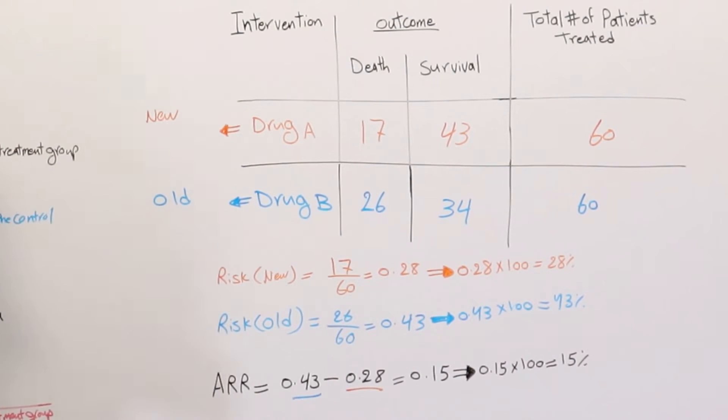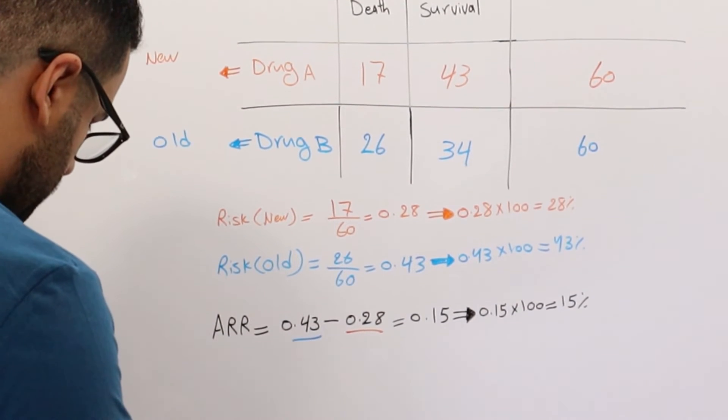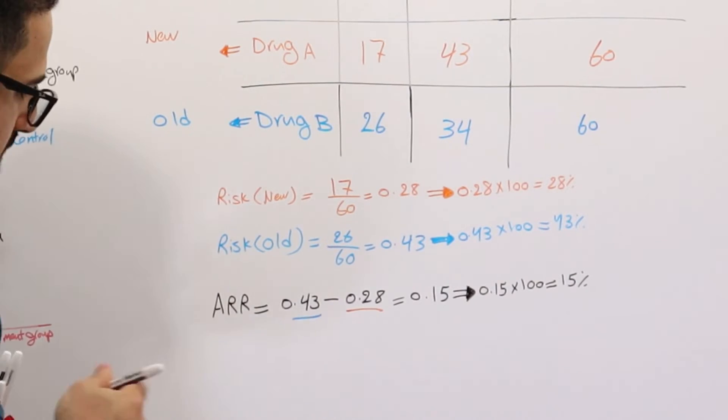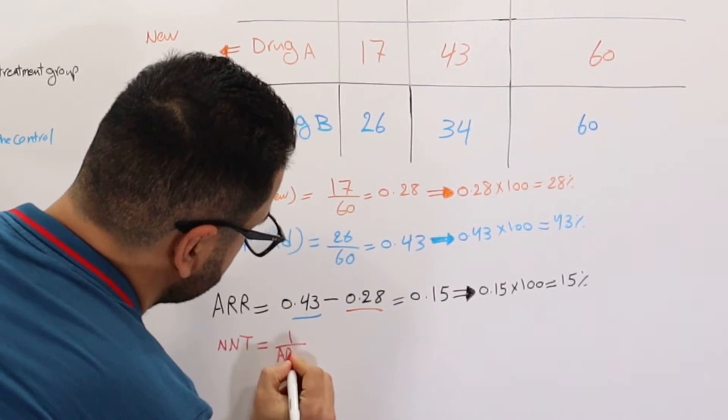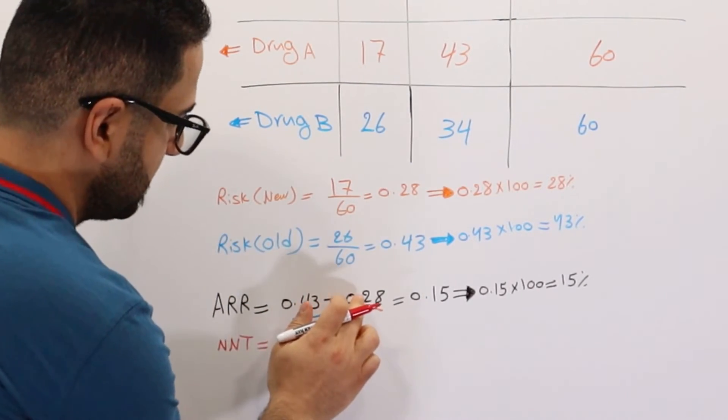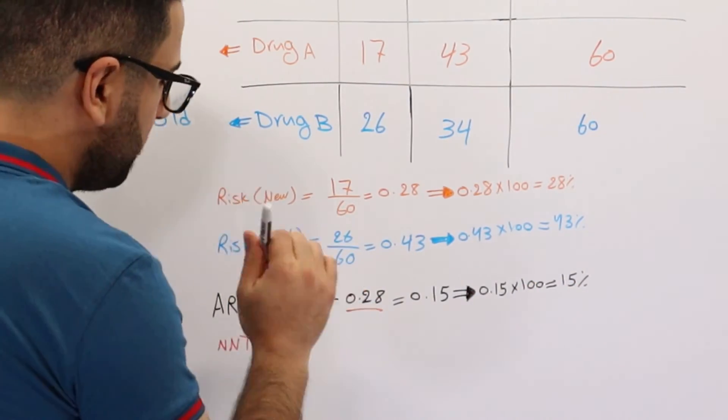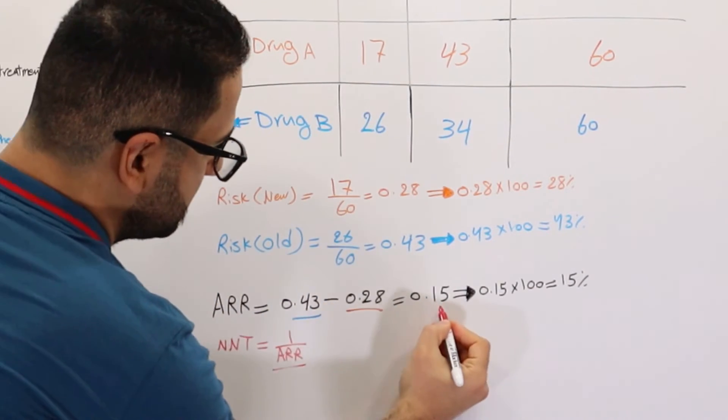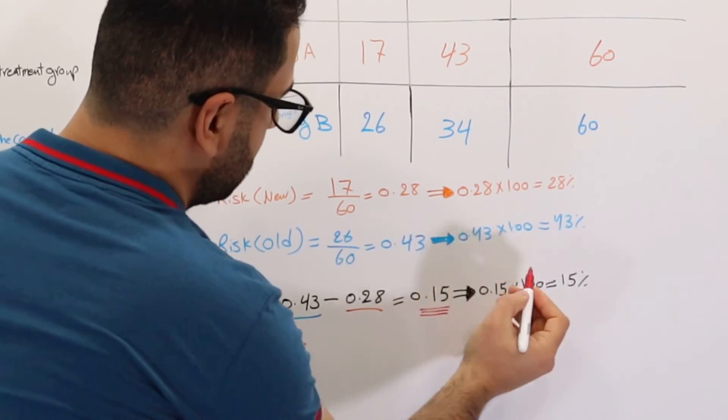A few things to keep in mind when we are using the number needed to treat. We said it's going to be 1 over absolute risk reduction. In the absolute risk reduction, we can only use decimal places and not a percentage. If you use a percentage, you're going to have a way different and incorrect number. Always remember, when you're using the 1 over absolute risk reduction, it's always the decimal place. So always make sure to use the decimal place and not the percentage.